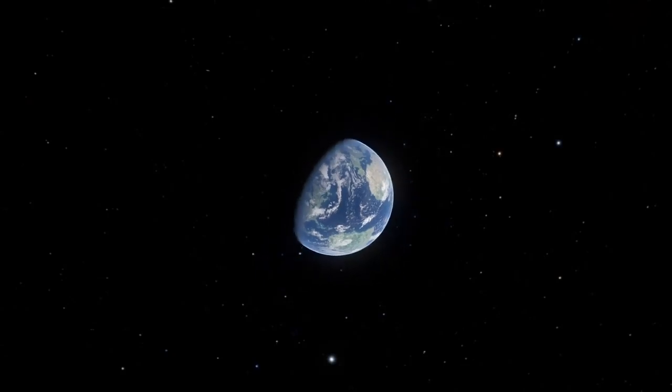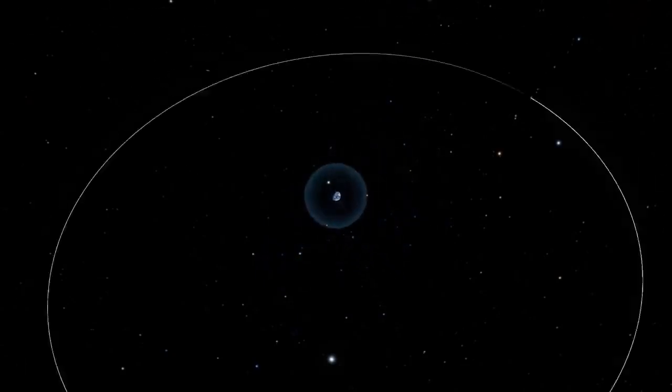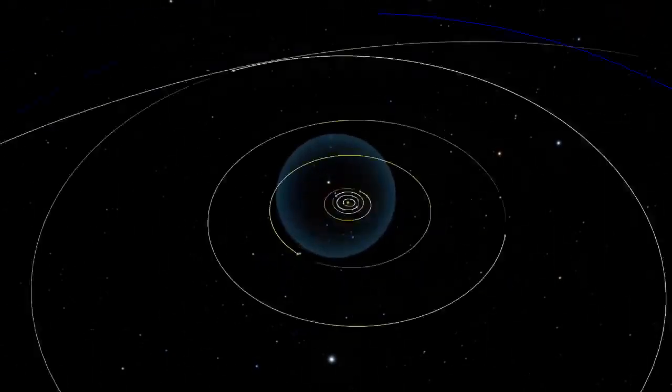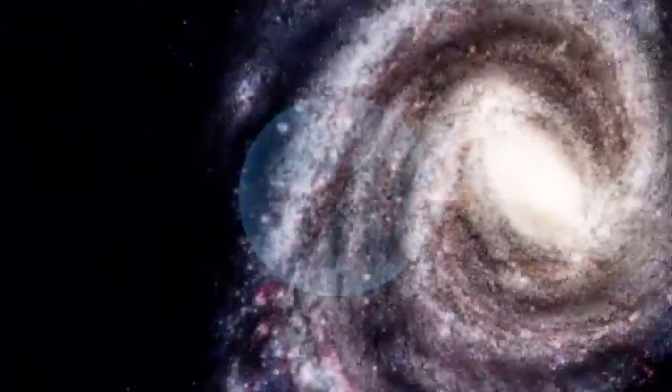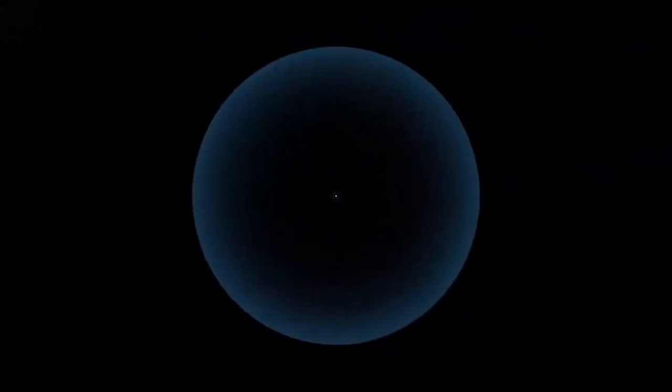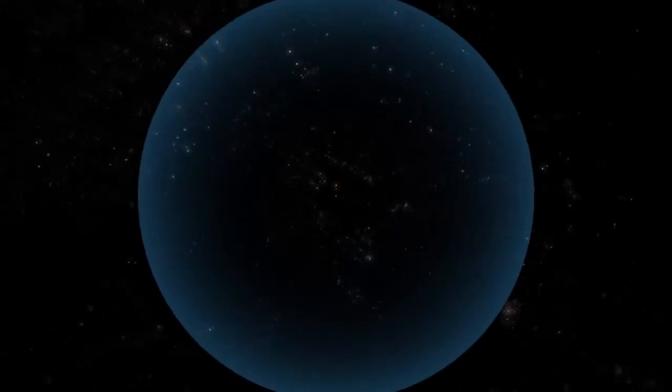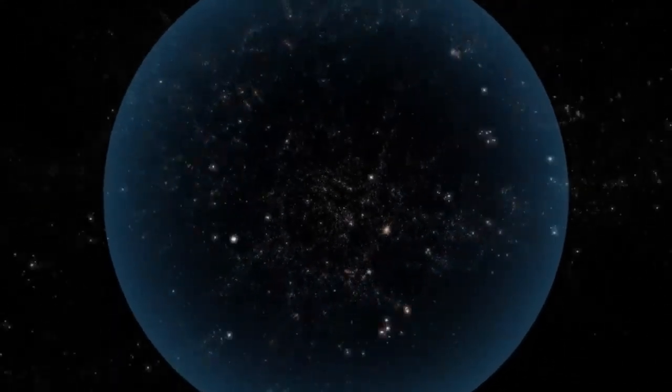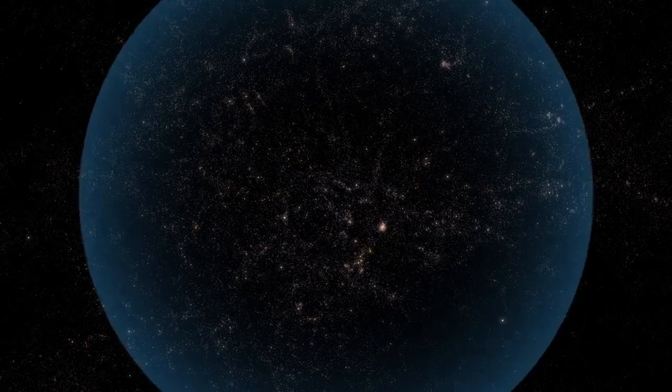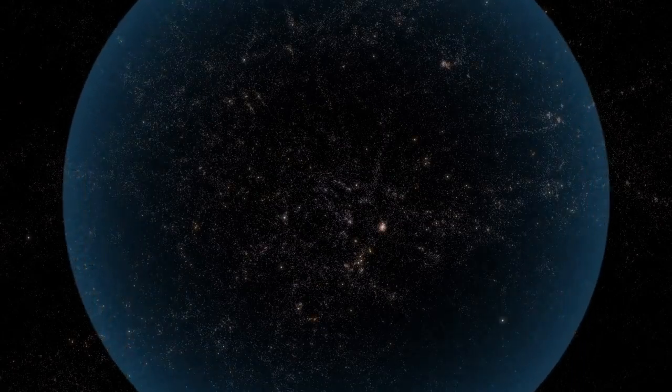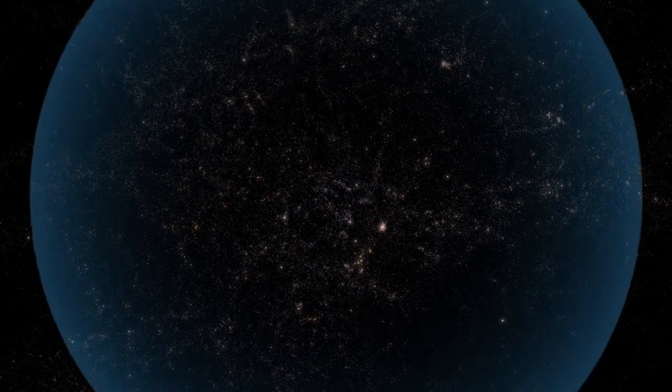These are only the galaxies within the so-called observable Universe. This consists of all objects that can in principle be observed with telescopes like Hubble, those from which light has had time to reach us since the beginning of the Universe. Beyond this limit, known as the cosmological horizon, the Universe continues. Just how far it goes is yet an unanswered question.